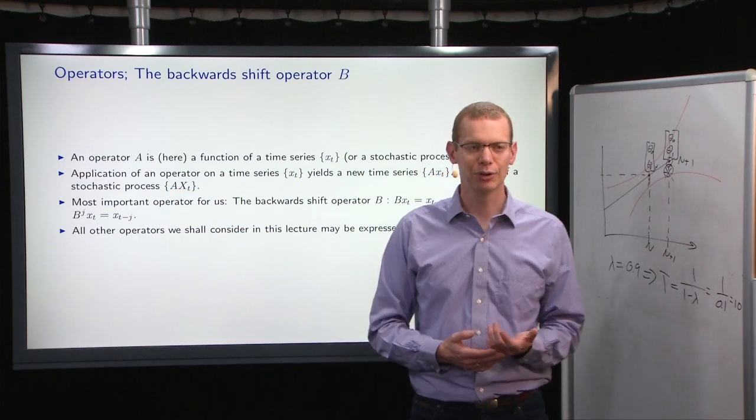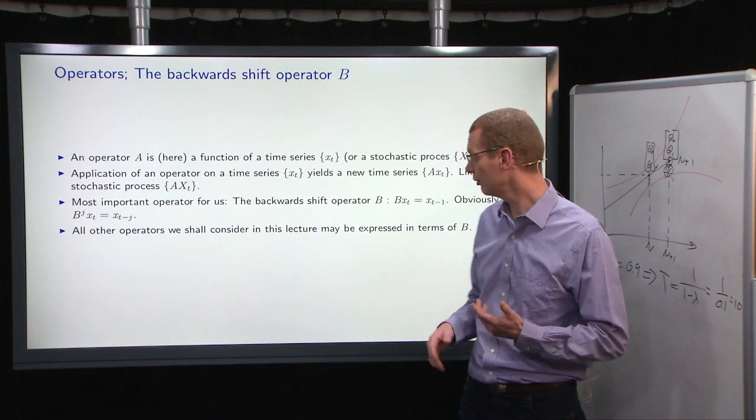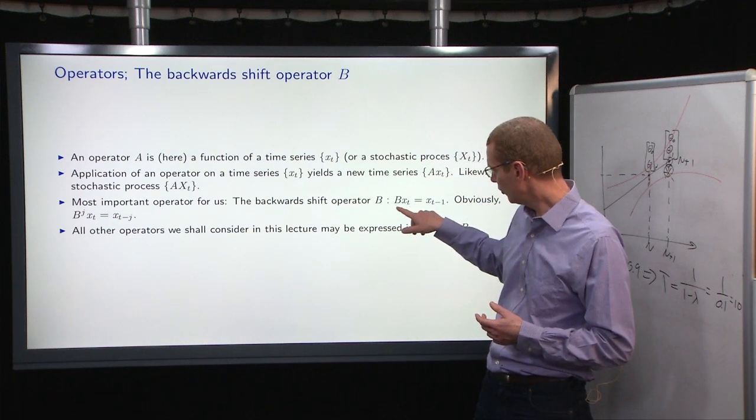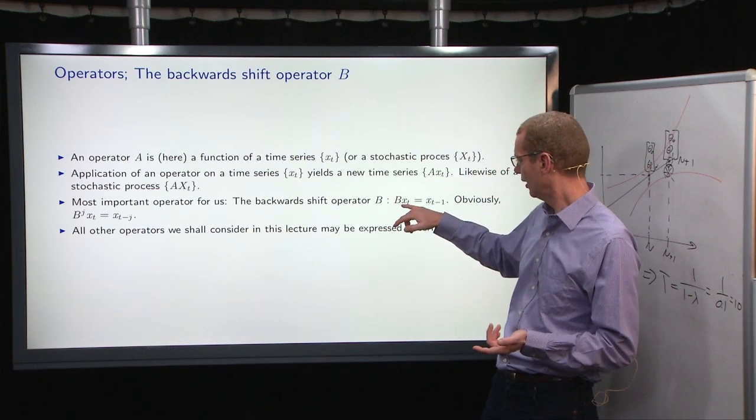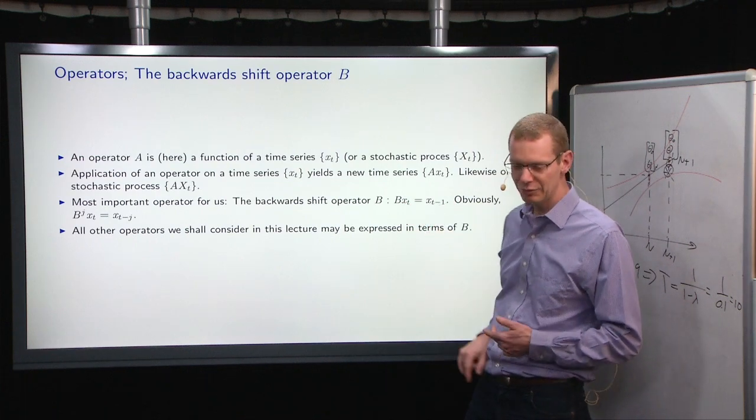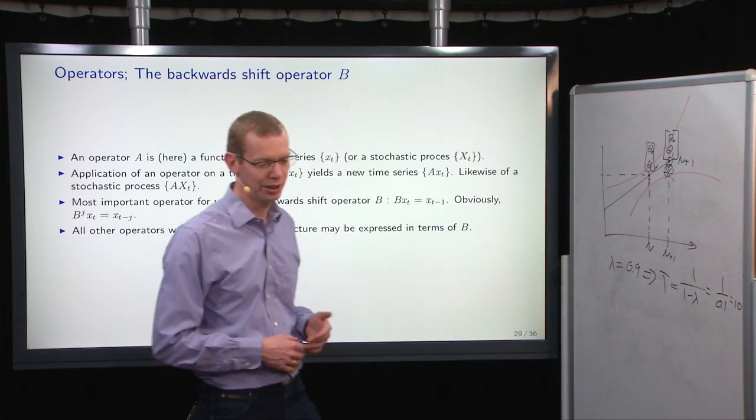The most important operator that we're going to use is the backward shift operator. What it does when you apply that on x_t, what you get is x_{t-1}. So you just step one step backwards in time.